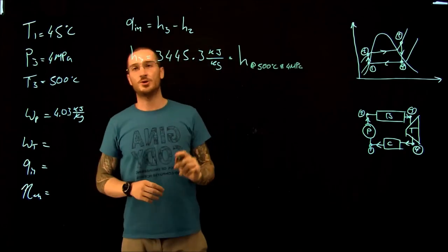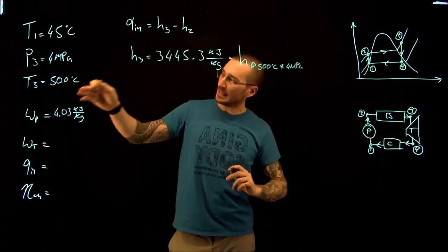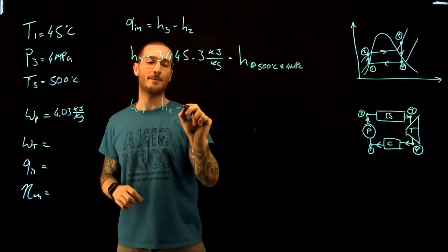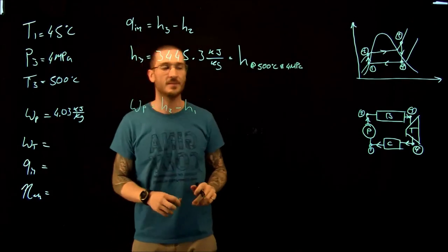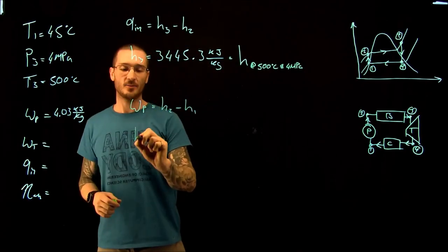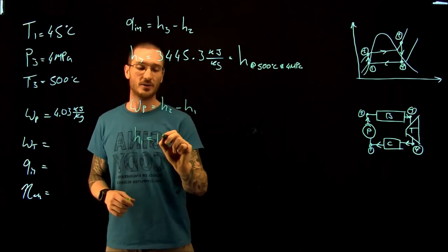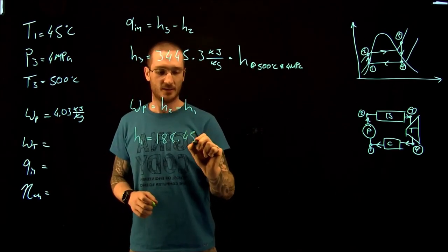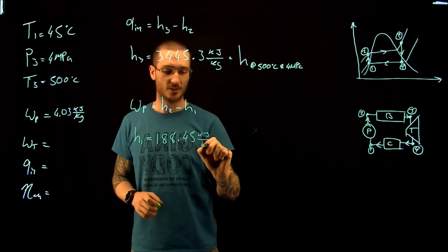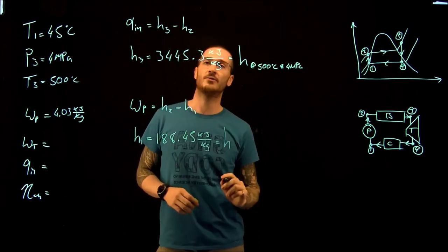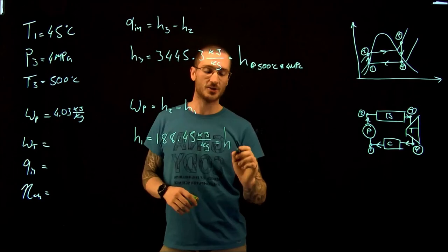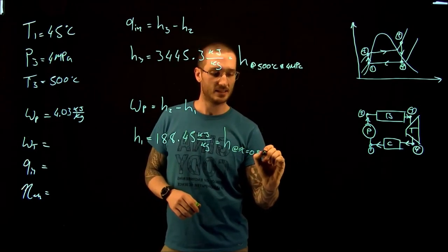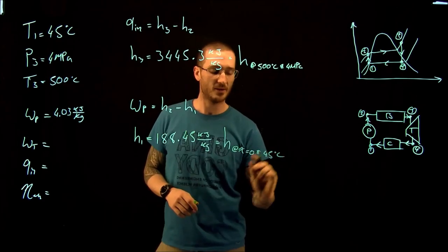We need to find the enthalpy at point two. The work of the pump equals the enthalpy at point two minus the enthalpy at point one. From the saturated mixture tables at quality equal to zero and T = 45°C, the enthalpy at point one is 188.45 kJ/kg.